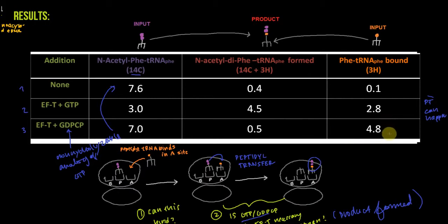We've successfully gotten our two inputs onto the ribosome, so the next question is: will a product be formed? You can see here that with GDPCP (non-hydrolyzable GTP), no product is formed. This indicates that the hydrolysis of GTP must be key to form this product, this N-acetyl-di-Phe-tRNA-Phe. That is all we conclude from this data. What I'm going to explain next is what's really going on, but you can't conclude what I'm about to say from this data.